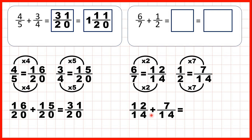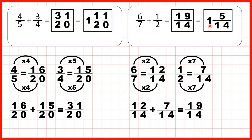We have a common denominator, so that stays the same in our answer, and twelve plus seven is nineteen. As an improper fraction, our answer is nineteen over fourteen. That's one and five over fourteen as a mixed number, because nineteen divided by fourteen is one remainder five.